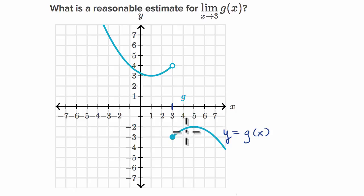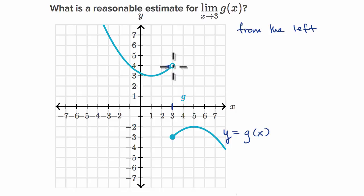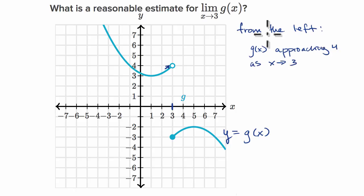All right, so let's think about it in two parts. Let's think about the limit as x approaches three from the left. As we approach x equals three from the left, our graph seems to — if I just eyeball it — seems to be approaching the value four. So from the left, it looks like we are approaching four. G of x approaching four as x approaches three from the left.